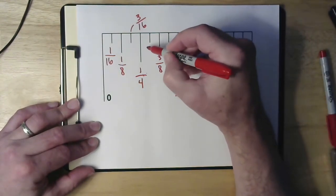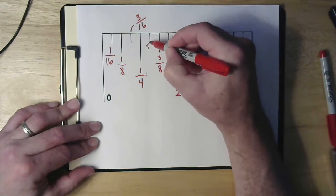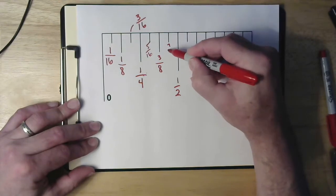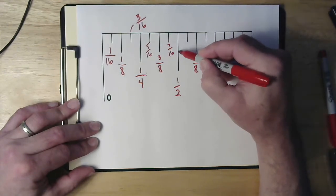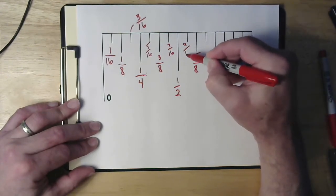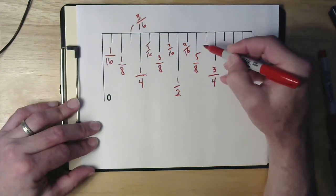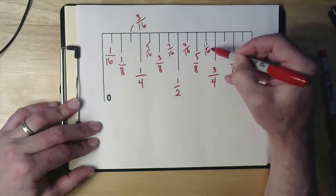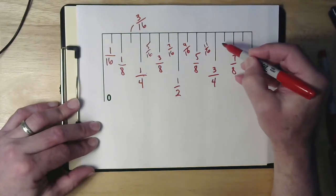So then that makes this, this one here is five sixteenths, six sixteenths, seven sixteenths, eight sixteenths, nine sixteenths. Sorry, 10 sixteenths, 11 sixteenths, 12 sixteenths.